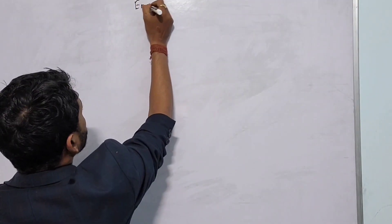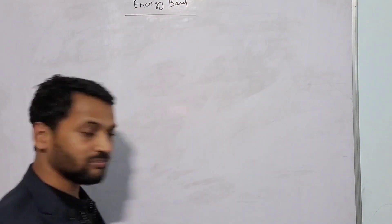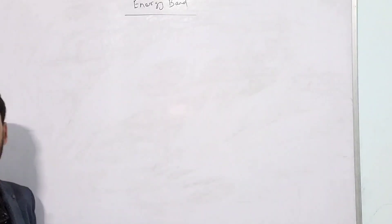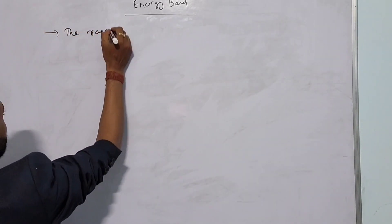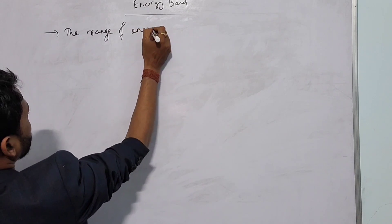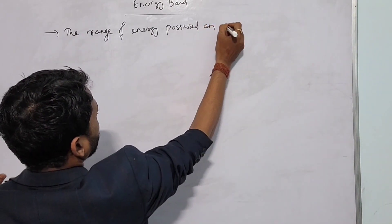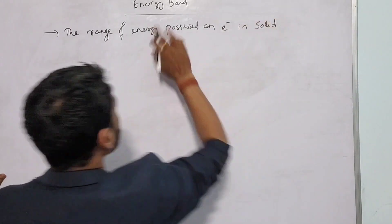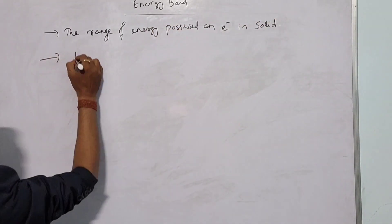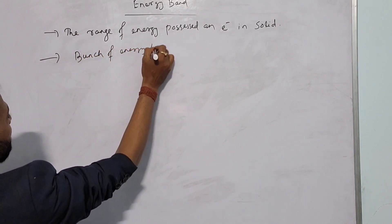So first is energy band. Energy band is a bunch of energy levels, or you can say the range of energy possessed by an electron in a solid. The range of energy possessed by an electron in a solid — that is the actual definition of energy band, or we can write: a bunch of energy levels.